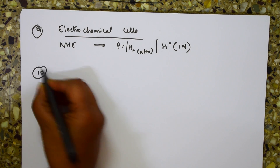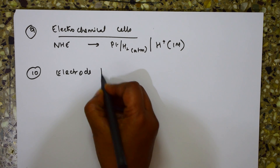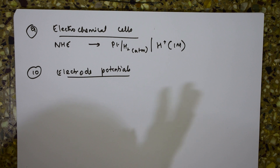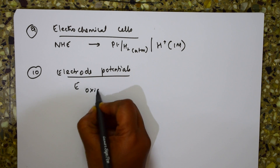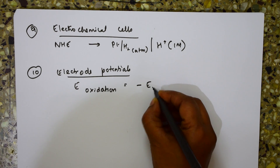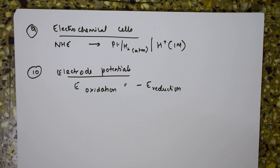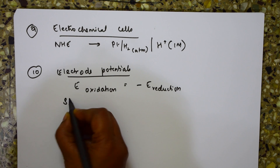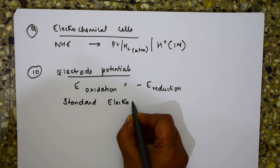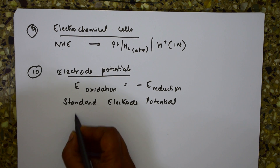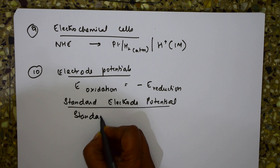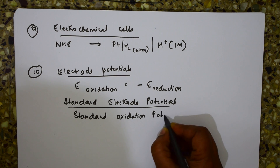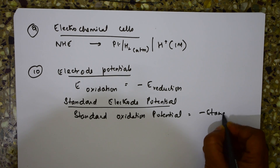The tenth formula covers electrode potentials. You must remember both oxidation and reduction potentials. The key relationship is: E_oxidation = −E_reduction. In terms of standard electrode potentials: E°_oxidation = −E°_reduction.